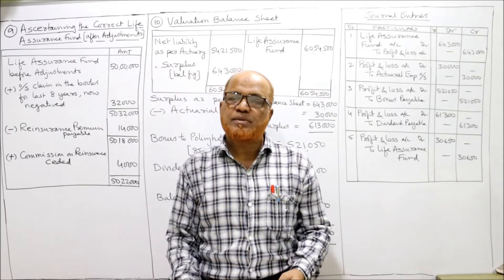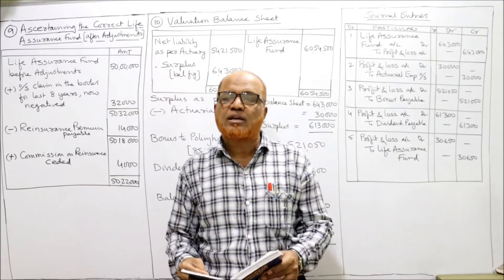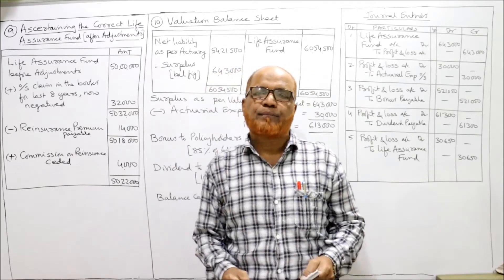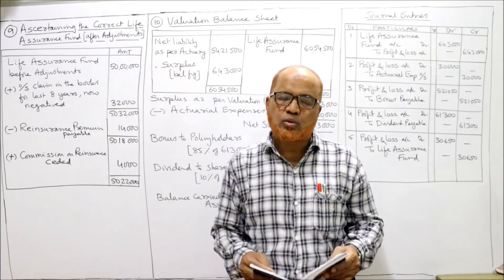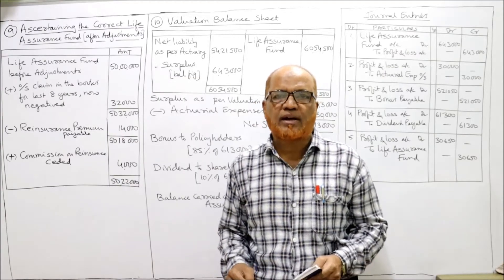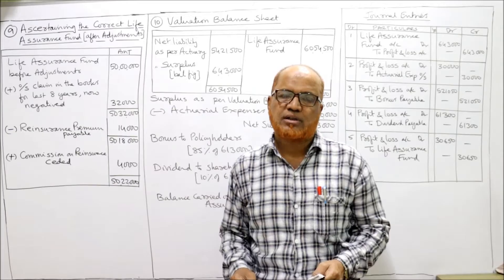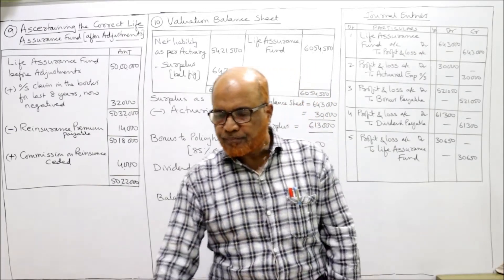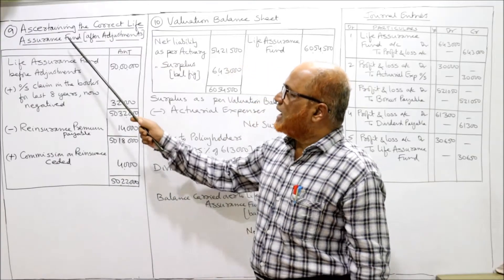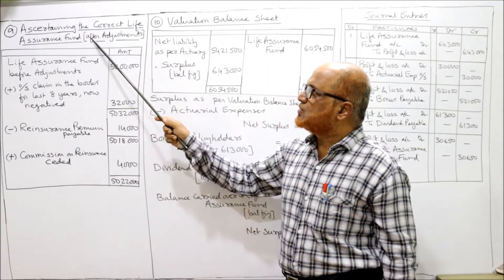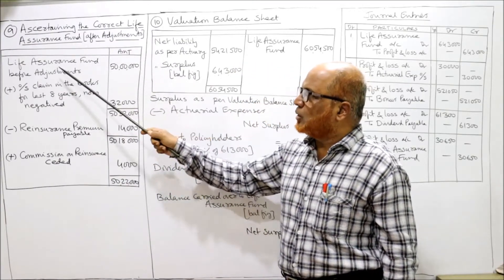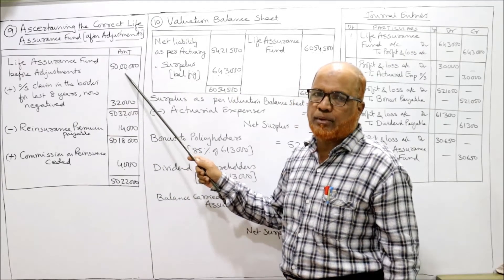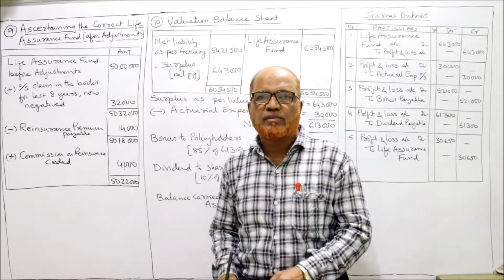There are three adjustments. Without taking those adjustments into account, the life insurance fund was given as 50 lakh. Now we have to take those adjustments into consideration and find out the correct adjusted life insurance fund. So what we are going to find out is the correct life insurance fund after adjustments. Life insurance fund before adjustment is given as 50 lakh rupees.